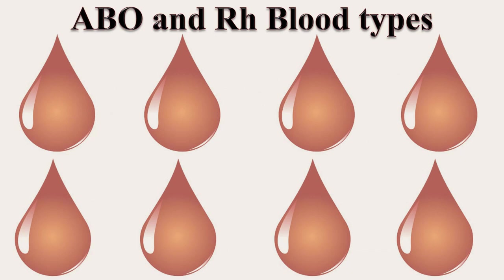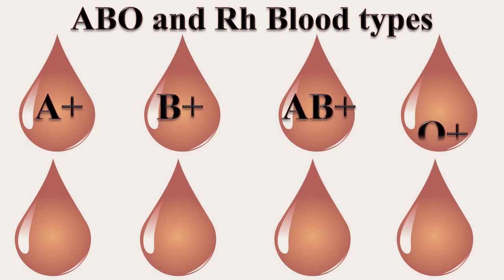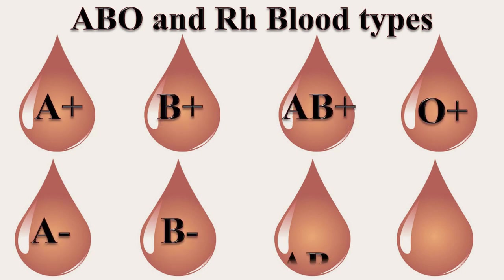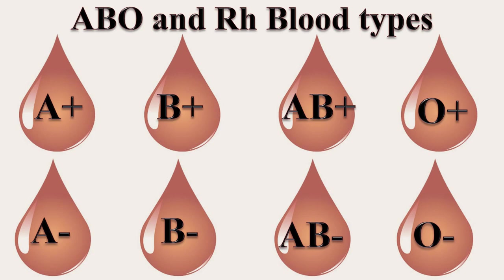Considering both ABO and RH blood typing, we have eight different blood groups: A positive, B positive, AB positive, O positive, A negative, B negative, AB negative, and O negative.